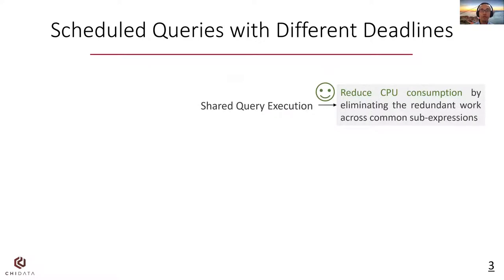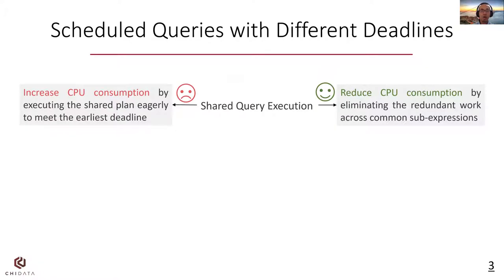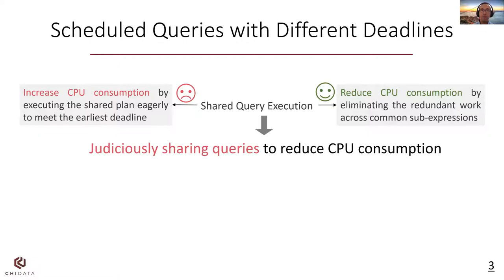Previous research shows that Shared Query Execution can reduce CPU consumption by eliminating the redundant work across common subexpressions. But we find this is not always the case. For scheduled queries, Shared Query Execution can even increase CPU consumption, because the shared plan needs to be executed eagerly to meet the earliest deadline. Therefore, we consider judiciously sharing queries to reduce CPU consumption while not missing the deadlines.